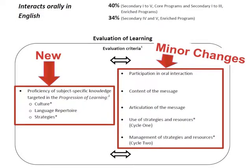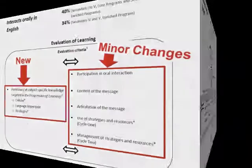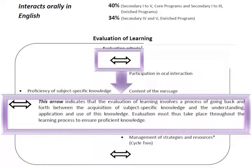The most important change in evaluation is the fact that we must now evaluate the knowledge. You'll also notice at the bottom of the page the double-sided arrow. The arrow's role is to tell us that we have to go back and forth between the knowledge and the competency. Our evaluation should not be all about the knowledge — you have to strike a balance between the knowledge and the competency.